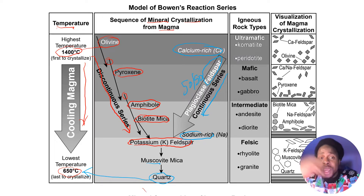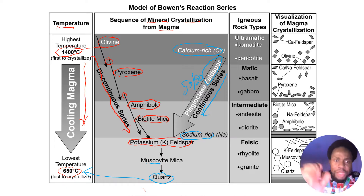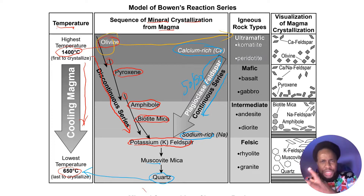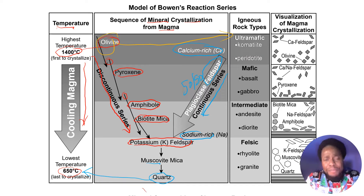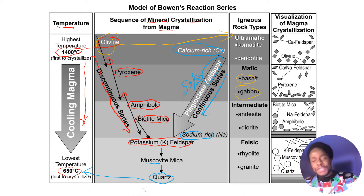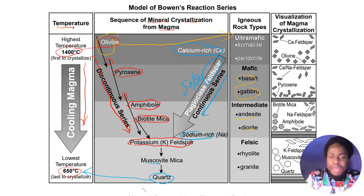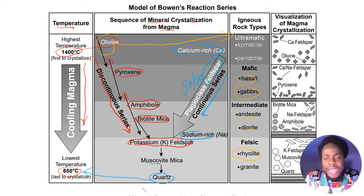At different temperatures, different igneous rocks are created. If all the mineral in the rock at high temperature is olivine, it will create ultramafic rock, which are darker and denser. A combination of olivine and pyroxene gives mafic rocks such as basalt and gabbro. In between mafic and felsic, we have intermediate rocks — andesite and diorite — which are richer in plagioclase feldspar with sodium content and amphibole. Further along, with muscovite mica and quartz, we get felsic igneous rocks: rhyolite and granite.